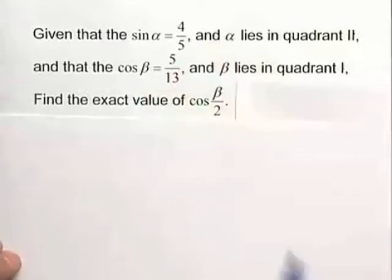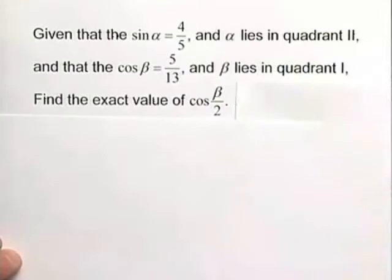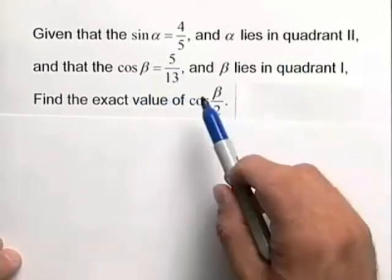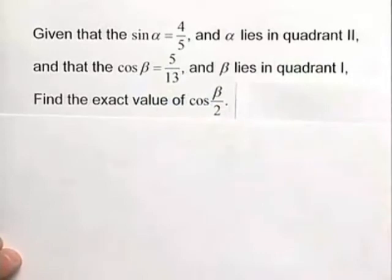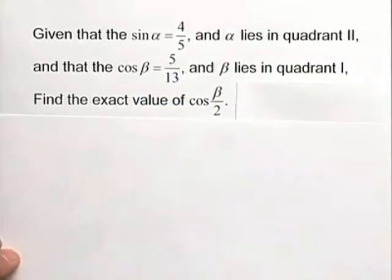Let's find the exact value of cosine using the half-angle formula. Given that sin α = 4/5 and α lies in quadrant II, and that cos β = 5/13 and β lies in quadrant I, find the exact value of cos(β/2).